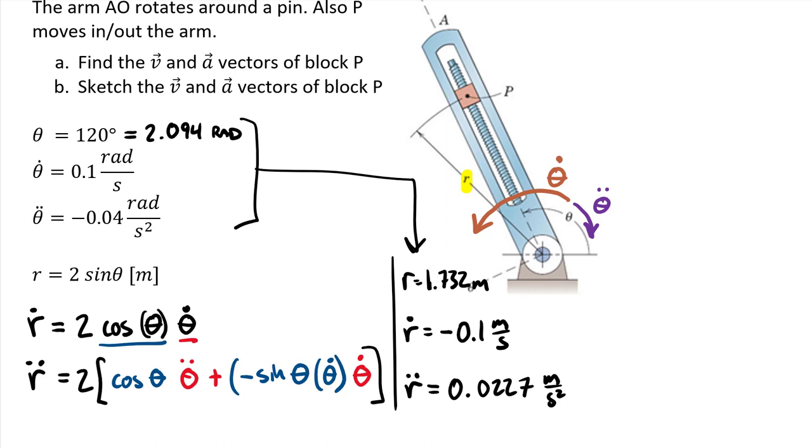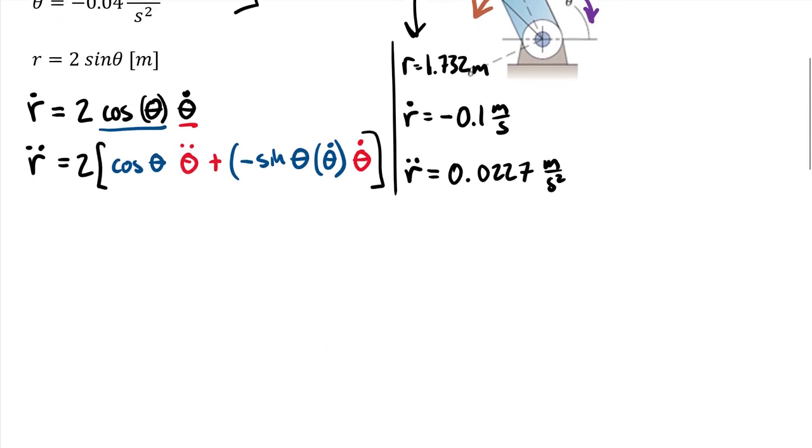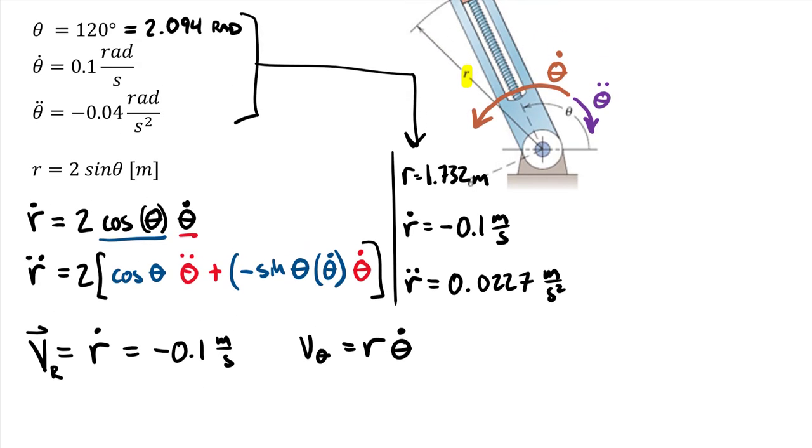All right, so the next step is essentially to plug these values into our equations, our equations for velocity and also acceleration. We know that the velocity vector is equal to, let's actually break this down into v r and v theta, just to kind of separate things out. So we know this is equal to r dot, so simply bringing that value in, negative 0.1, and that's in meters per second. And then we have v theta, which is equal to r times theta dot.